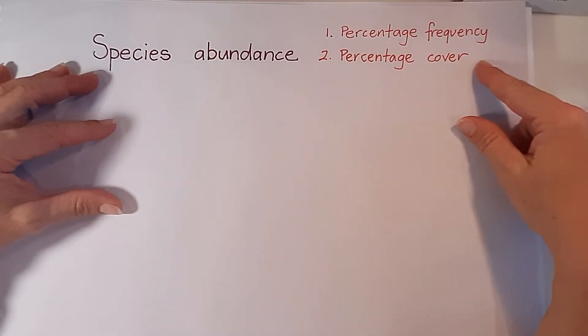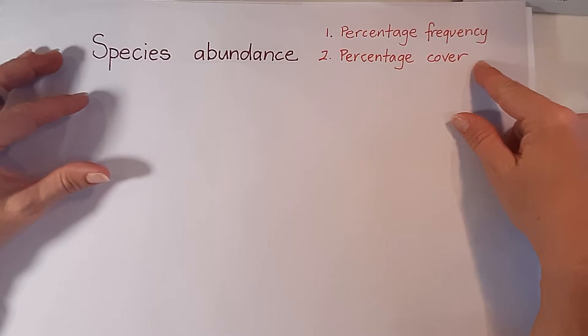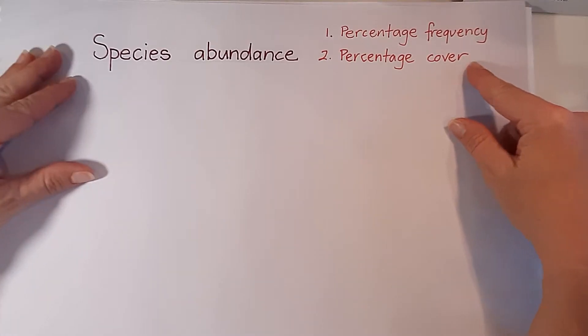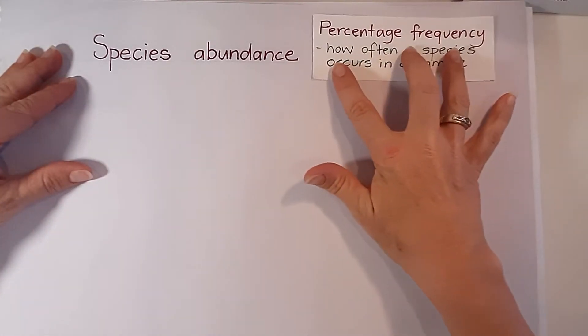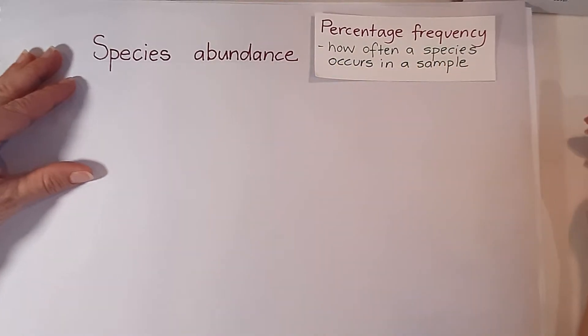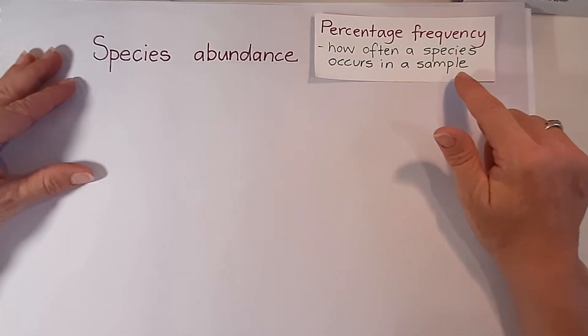Percentage frequency and percentage cover are both measures of abundance. So let's start with percentage frequency. Percentage frequency is a measure of how often a species occurs in a sample.